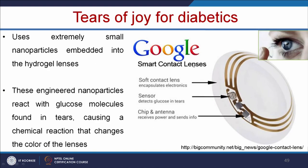Google has made a smart contact lens with a sensor that can detect glucose in tears. This technology uses small nanoparticles embedded in hydrogel lenses. These engineered nanoparticles react with glucose molecules in tears, causing a chemical reaction that changes the color of the lenses. The tiny sensor sends information about blood glucose to a mobile phone, and the color of the contact lens also changes, giving an indication of the sugar level in the blood.